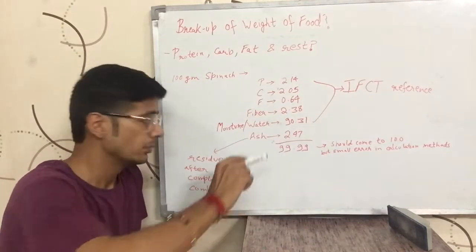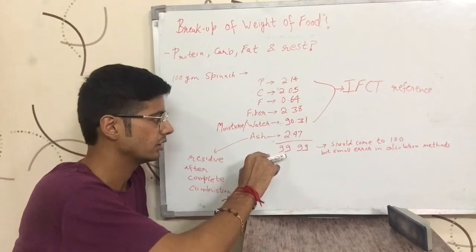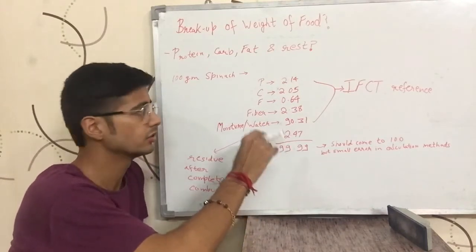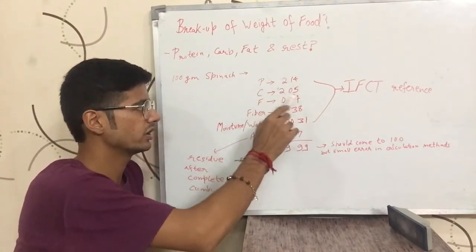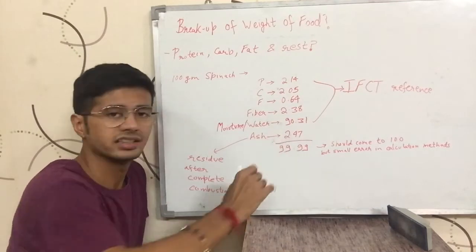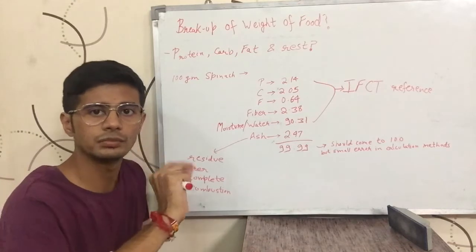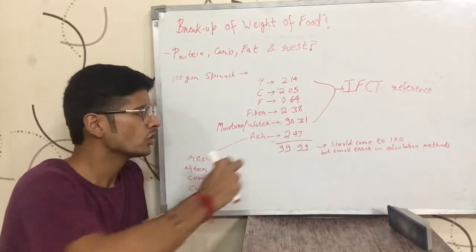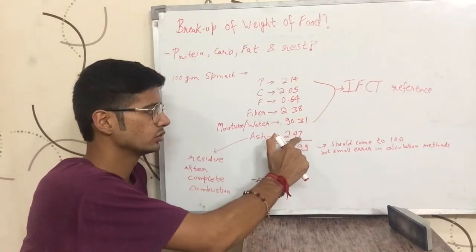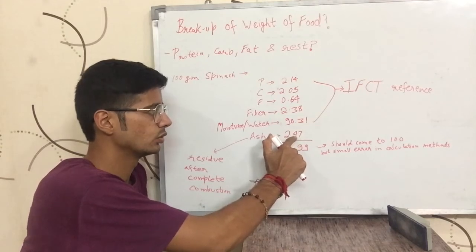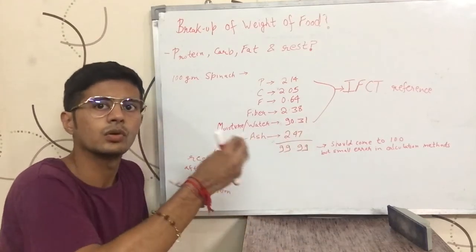If you add it all up, you should have 100 grams. Right now we have 99.9 grams. You can see they are using protein, carbohydrate, fat, fiber, water, and ash. The small error is what they are showing.